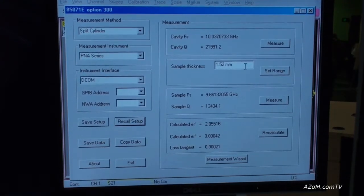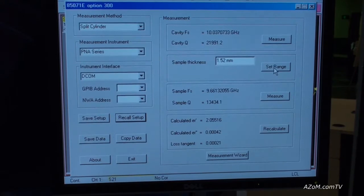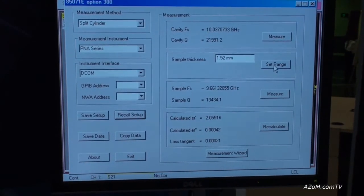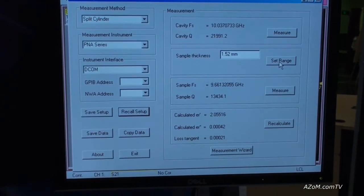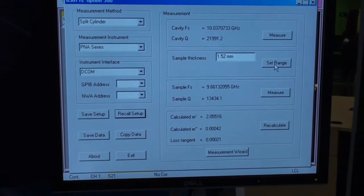The next step is to enter the sample thickness and then set the range. So I've selected the frequency, the first usable mode which is the TE011 mode which occurs at around 10 gigahertz.